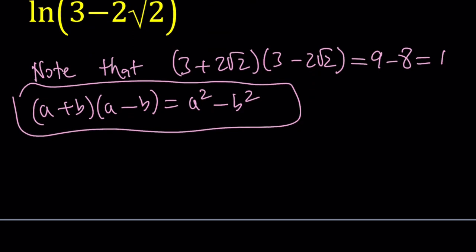So, what does this tell us? This tells us a very important property that one of these, say 3 plus 2 root 2, can be written as the reciprocal of the other. So, we can basically write the 3 plus 2 root 2 as 1 over 3 minus 2 root 2. Now, when you cross multiply, you'll get 1, so it checks out.